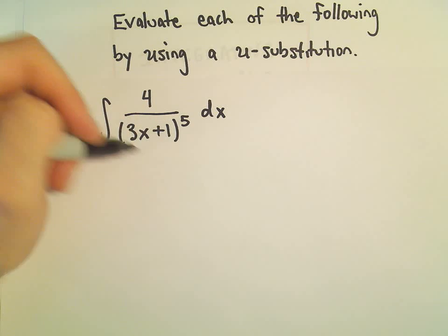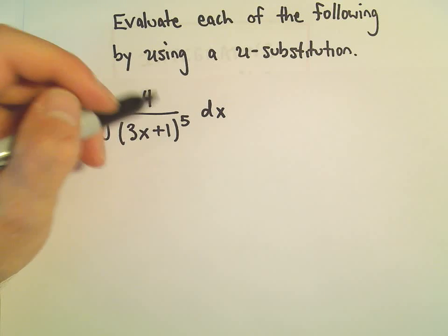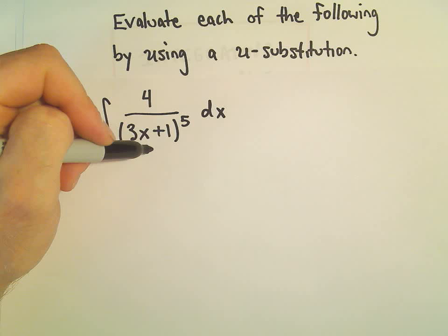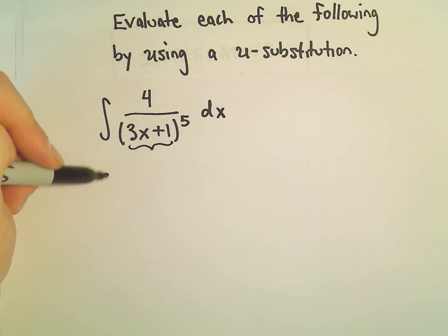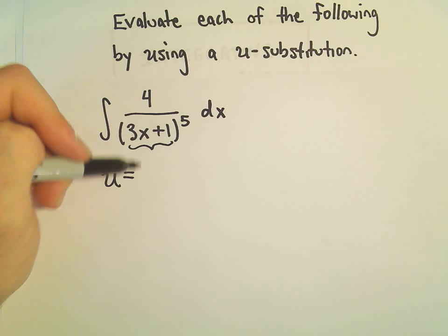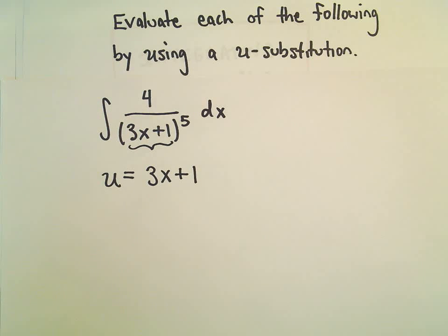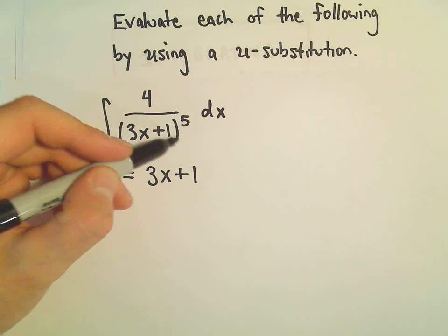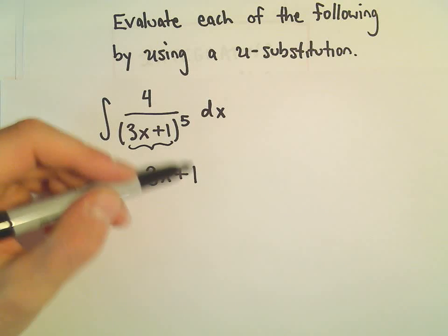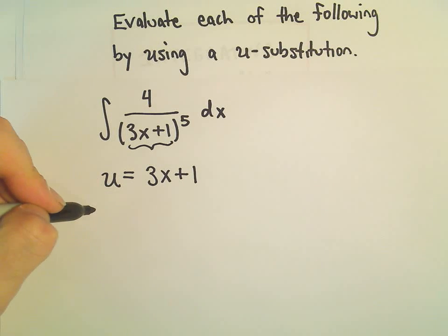But it's not just a single variable to the 5th power. But again, that kind of suggests to me something to pick for my u-substitution. So I'm going to let u be the stuff in the parentheses, 3x plus 1, and oftentimes things that are being raised to a power, a lot of times that is going to be what you pick for your u-value.